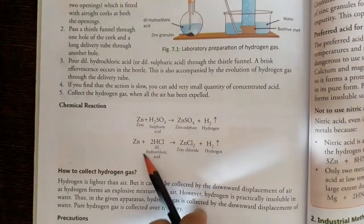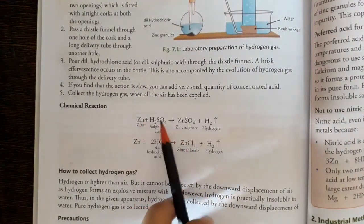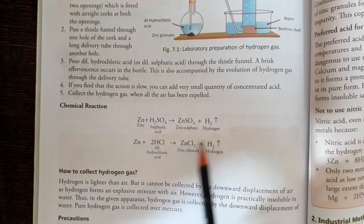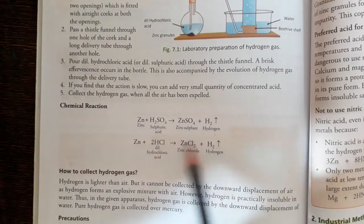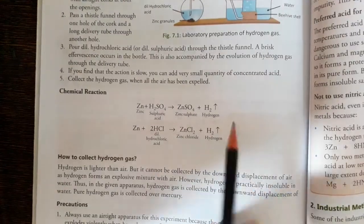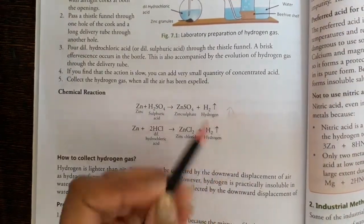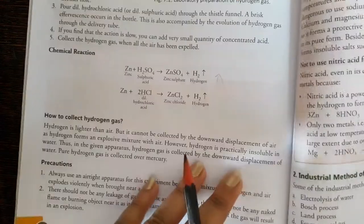Chemical reactions: Zinc plus sulfuric acid gives zinc sulfate plus H2 gas released. Zn plus 2HCl gives ZnCl2 plus hydrogen gas is removed. You get hydrogen. This is the reaction that produces gas.